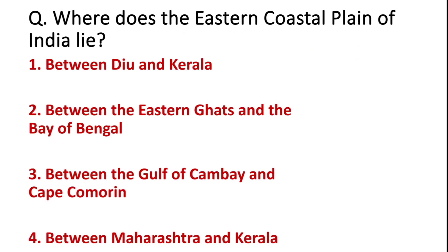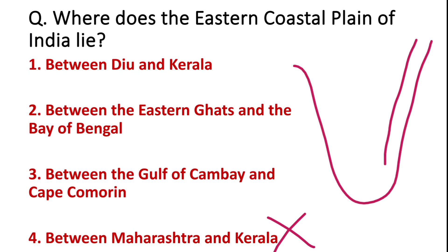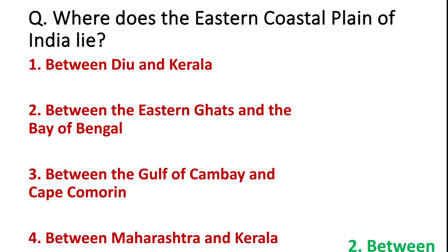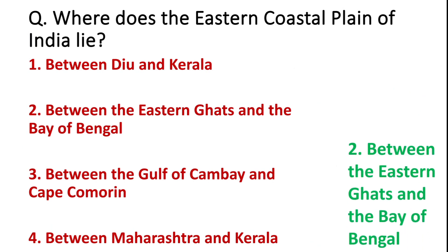Where does the Eastern Coastal Plain of India lie? Options: between Diu and Kerala, between Eastern Ghats and Bay of Bengal, between Gulf of Khambhat and Cape Comorin, or between Maharashtra and Kerala. Maharashtra and Kerala is not possible. The portion between the Eastern Ghats and the Bay of Bengal is called the Eastern Coastal Plain. The correct answer is between Eastern Ghats and Bay of Bengal.